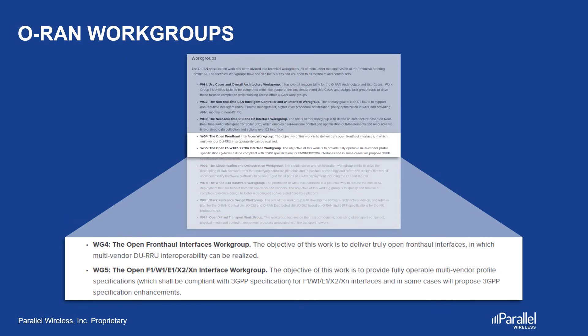We have introduced the groups looking at standardizing Open RAN in an earlier video. This slide highlights the O-RAN working groups. Working Group 4 is focused on delivering truly open fronthaul interfaces, while Working Group 5 is focused on creating open interfaces that have been defined by 3GPP — as you will notice, X2 is one such interface that this working group focuses on.